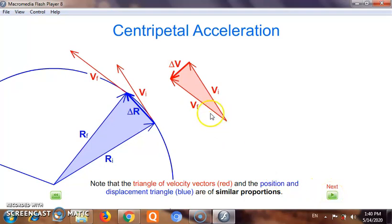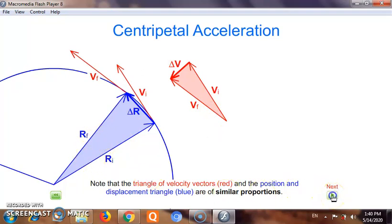Angles are same, they are basically by angle-angle-angle, I mean side-angle-side test. The triangles are in similar proportion and therefore the corresponding sides have to be in the same proportion: delta r divided by r, its magnitude is equal to delta v divided by v.